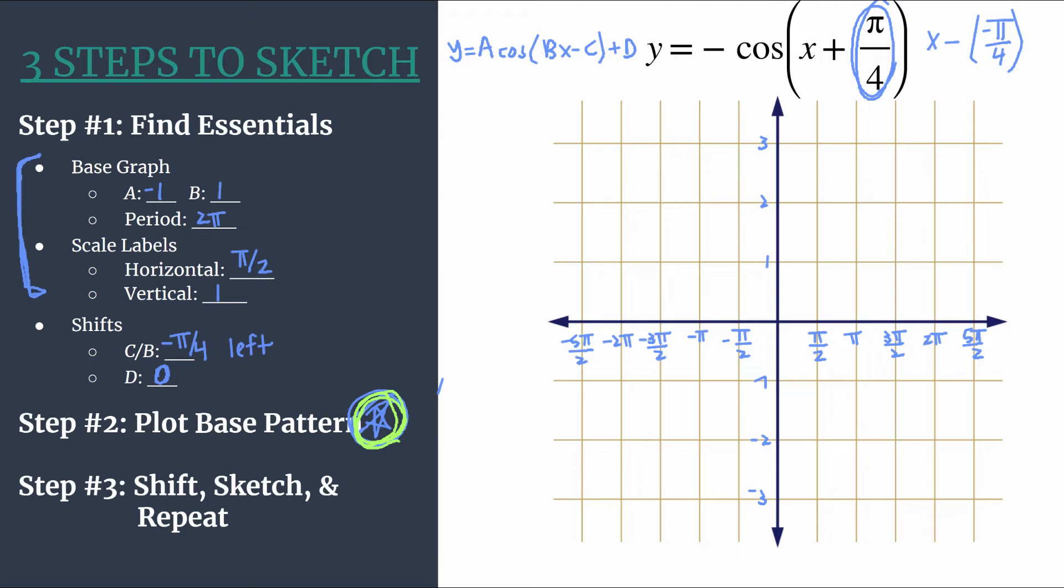For a base cosine graph we'll start on the y-axis and we'll look to a for the value, so we know the y coordinate will be negative one. Lightly mark a point at zero negative one. Our first zero should fall at the first horizontal tick mark. Our next key point will happen at the second horizontal tick mark and its y coordinate will be one. Our final key point in the base pattern will be another zero at the third horizontal tick mark. Let's close out our pattern with the first point of the repeat. It'll be a minimum at two pi. This is our base pattern, a flipped upside down cosine. We're waiting until the next step to do the shift.